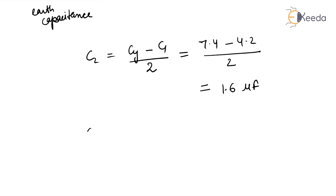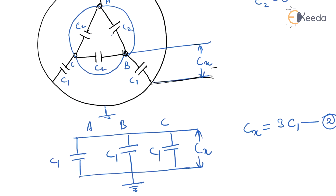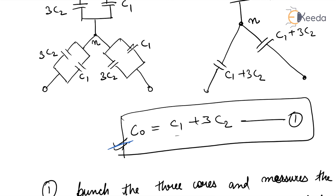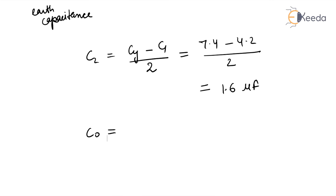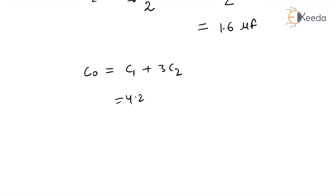C0, the capacitance per phase (core-to-neutral capacitance), equals C1 plus 3C2. Substituting the values: 4.2 plus 3 times 1.6 equals 9 microfarad.